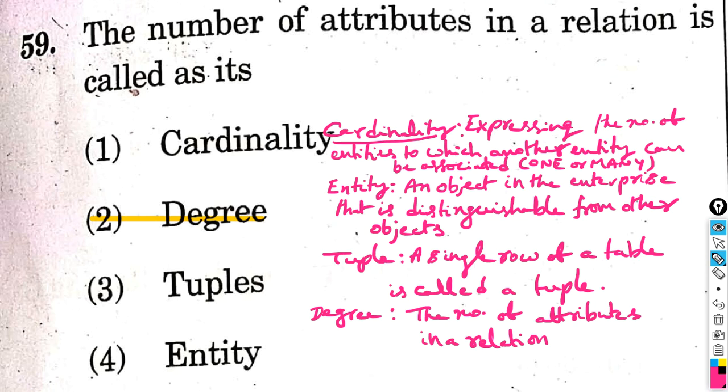Degree - the number of attributes in a relationship is called the degree.